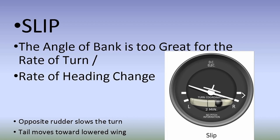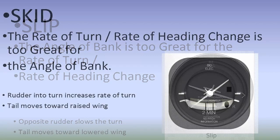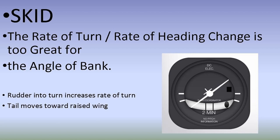A slip is a flight maneuver in which the angle of bank is too great for the rate of turn or heading change. We use opposite rudder to enter a slip — the nose moves the other way, slowing the turn, and the tail moves towards the lowered wing. A skid is just the opposite: the rate of turn is too great for the angle of bank. The pilot applies rudder into the direction of turn, the ball moves away from the lowered wing, and the tail moves towards the raised wing.